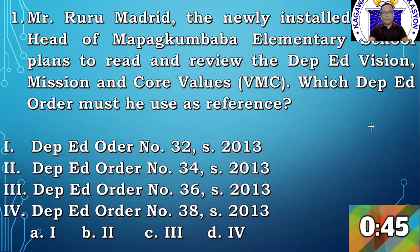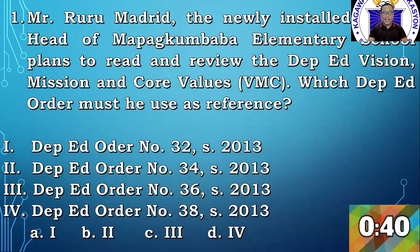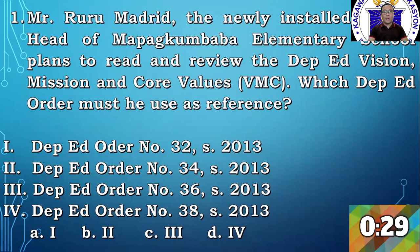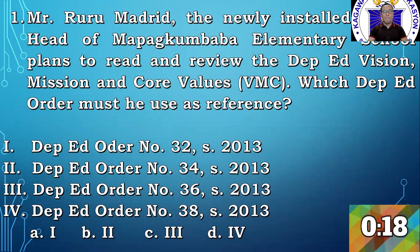Question number 1. Mr. Ruru Madrid, the newly installed school head of Mapagumbaba Elementary School, plans to read and review the depth and vision, mission, and core values. Which depth order must he use as reference? 1. DepEd Order number 32, series 2013. 2. DepEd Order number 34, series 2013. 3. DepEd Order number 36, series 2013. 4. DepEd Order number 38, series 2013. A1, B2, C3, D4.